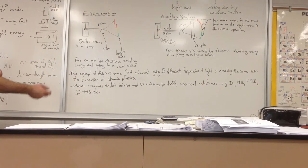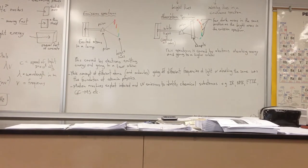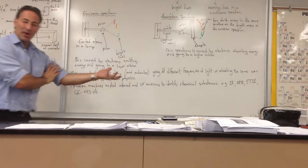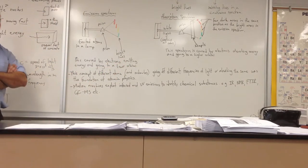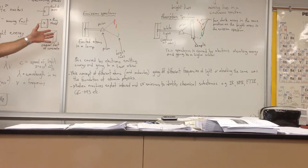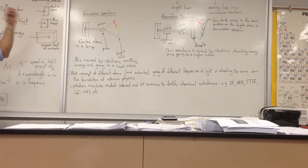This concept of different atoms and molecules giving off different frequencies of light or absorbing the same was the foundation of atomic physics. How did scientists know anything about the atom? How were they able to figure out anything? By looking at the spectra that they emitted. You can't put an atom under a microscope because you can't see it. It's too small. So you have to look at what it does to its surroundings in order to deduce anything about it.